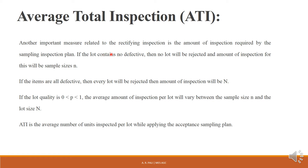If the lot contains no defectives, we take out the sample from the lot, the sample will have no defectives, we accept the lot, and the total number of units inspected is just n, the sample size. If all items are defective, every lot will be rejected and the amount of inspection will be capital N. We draw a sample, all items are defective, we reject the lot, and then perform 100% inspection — so each item is inspected and the amount of inspection equals the lot size N.